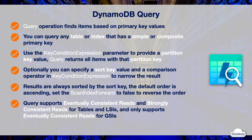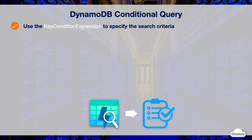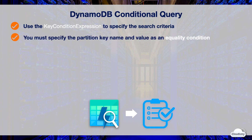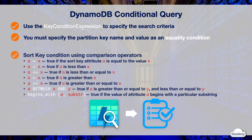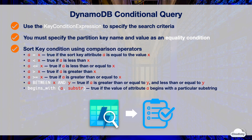Query supports both eventually consistent reads and strongly consistent reads for tables and LSIs. It only supports eventually consistent reads for GSIs. You can specify the search criteria using a key condition expression in the query statement to determine the items to be read from the table or index. You must specify the partition key name and value as an equality condition. Optionally, you can specify the sort key using comparison operators.